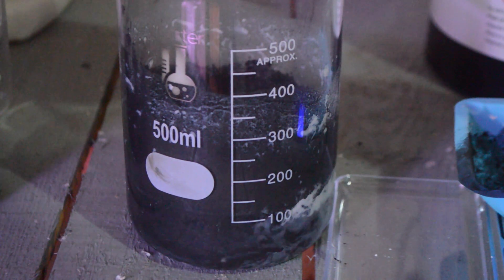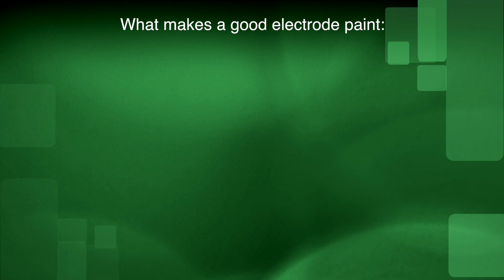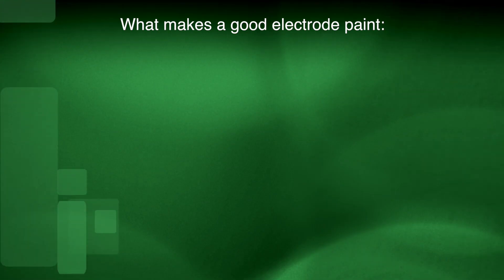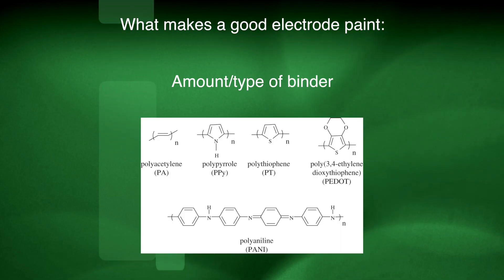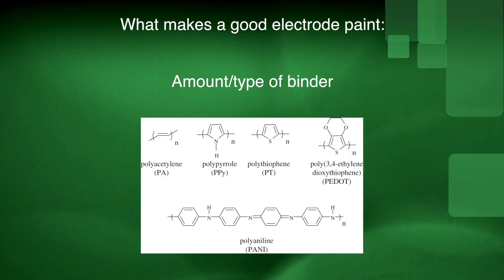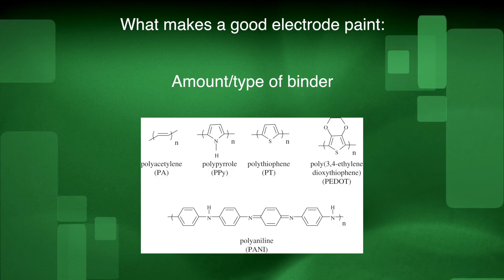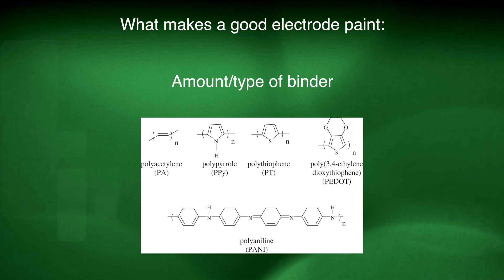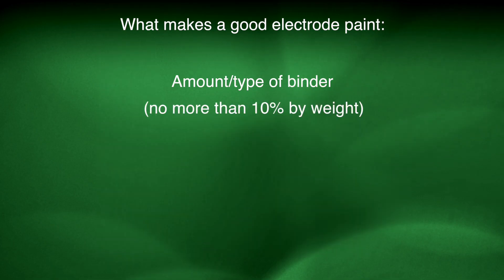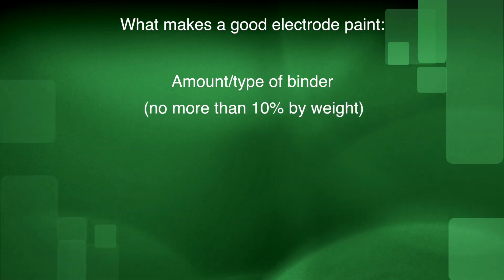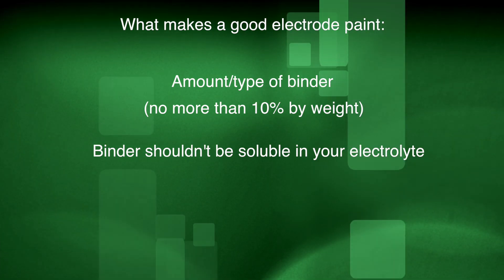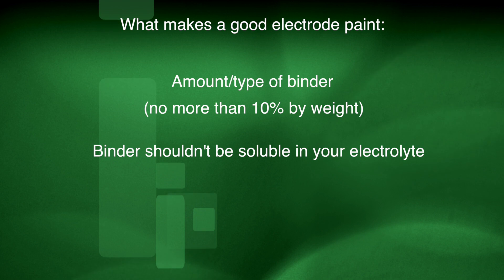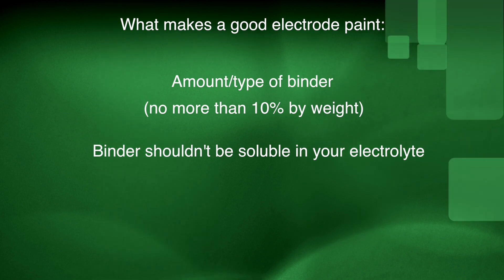To get the electrode material to stick to the current collector, we need to make it into a sort of paint. To make a good electrode paint, there's lots of things you need to keep in mind. The first is the amount and type of binder that you use. Unless you're using conductive polymers as your binder, almost anything else will increase the resistance of your paint and subsequently the internal resistance, which will lead to higher losses in your cell and lower power density. So you never want to use more than about 10% binder by weight in your paint. Also your binder shouldn't be soluble in the electrolyte solution you're going to be using or it'll just fall off the plates and make a mess. So your paint binder and solvent should take this into account.